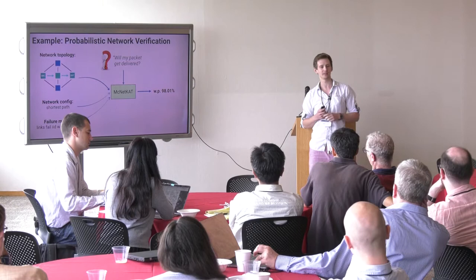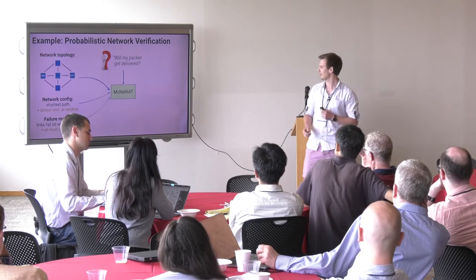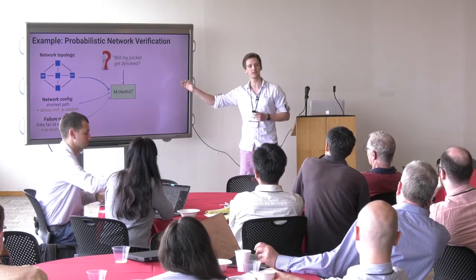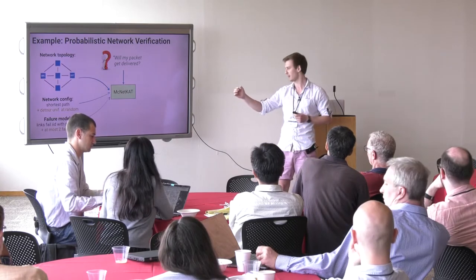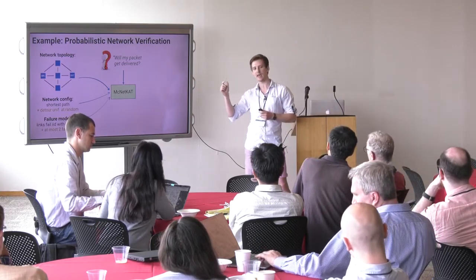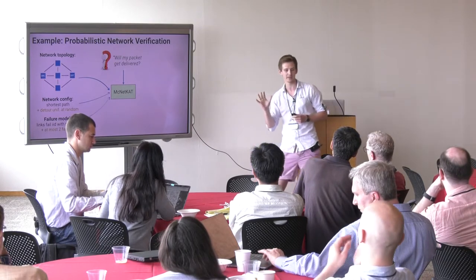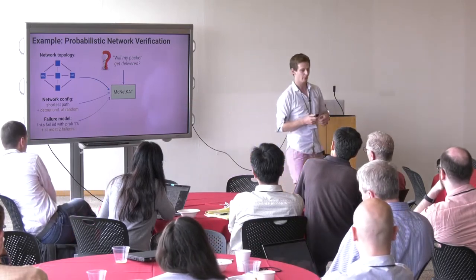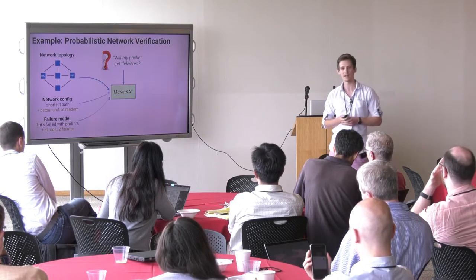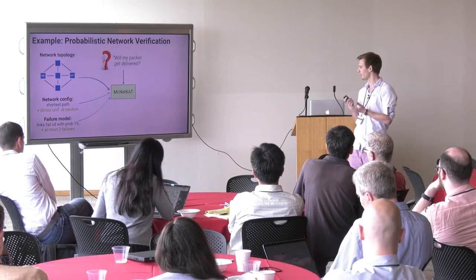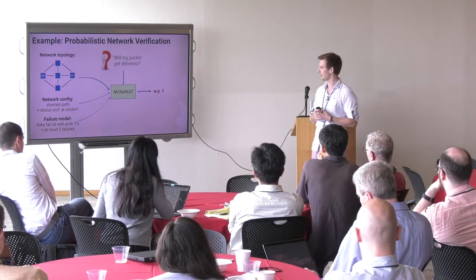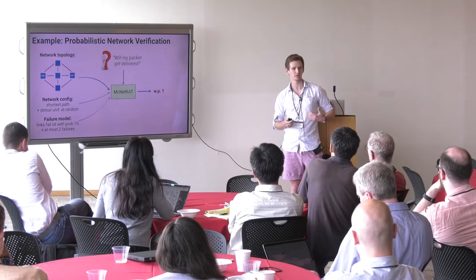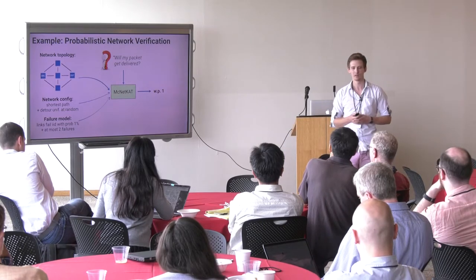Now that we have a useful tool, let's look at a slightly more sophisticated example. Instead of just taking the shortest path, we also try to route around failures. If the next hop on the shortest path fails for some reason, we'll just take a random next hop among those that are up, uniformly at random. We also adjust our failure model to assume at most two failures while the packet traverses the network. MagnetCat tells us that the probability of packet delivery will actually be one — this routing scheme is two-resilient, meaning it can tolerate two failures without any packet loss.